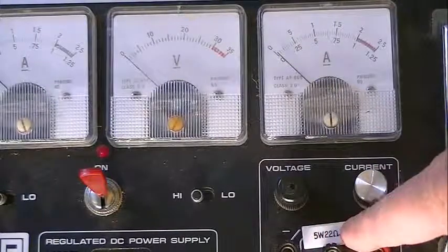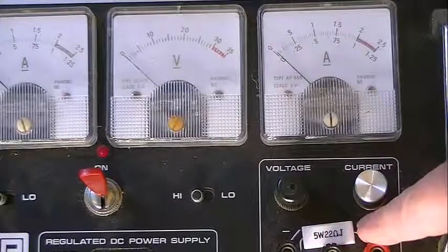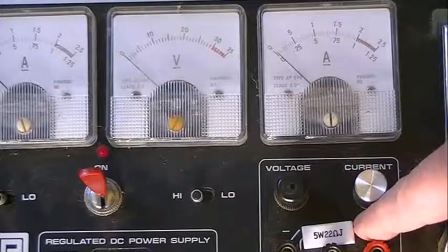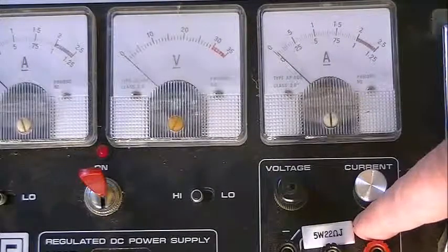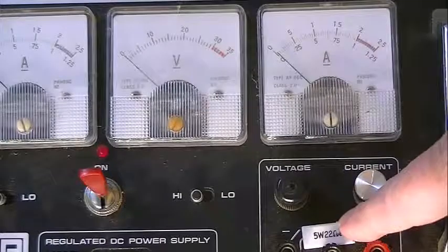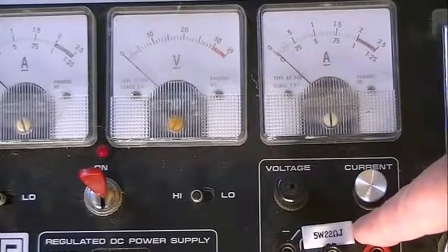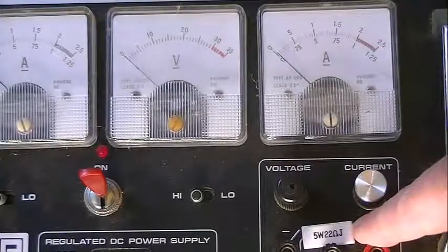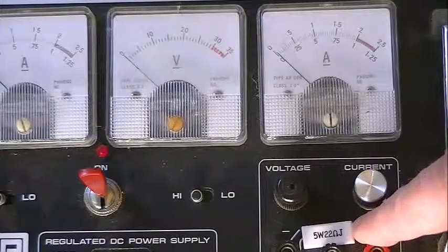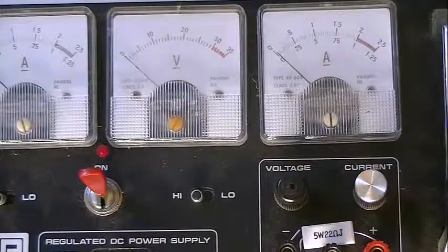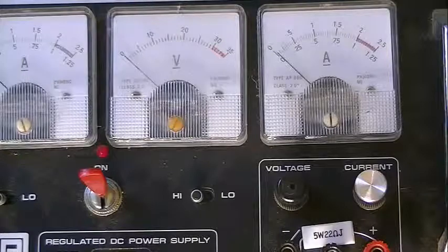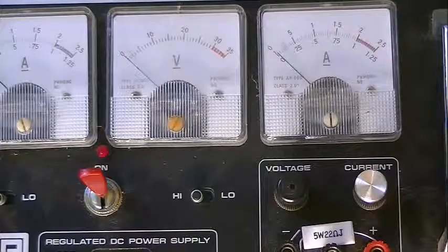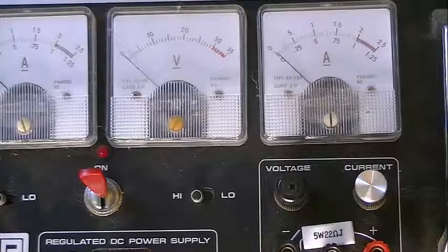This little fellow here you can see is a 5 watt 22 ohm resistor. The purpose of that is to control the flow of electricity in exactly the same way, or a very similar way, to the way the tap controlled the water flow from the drum.